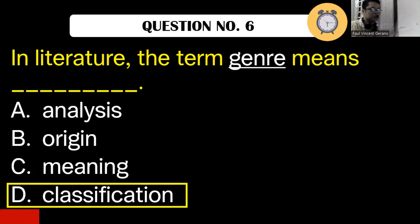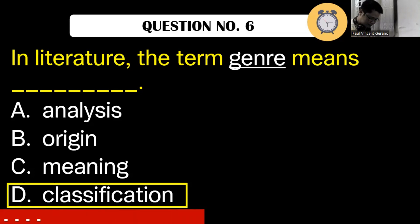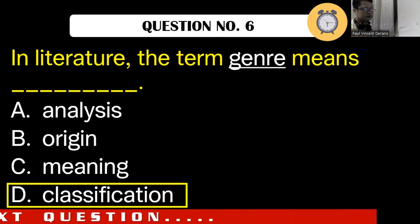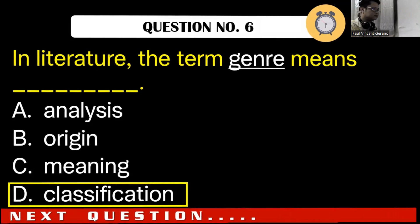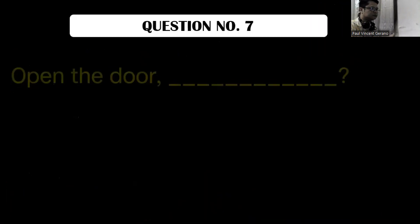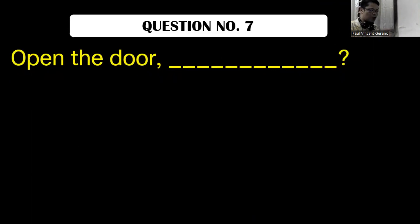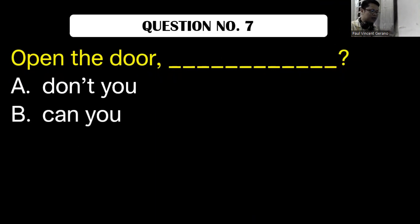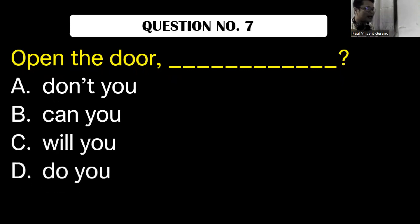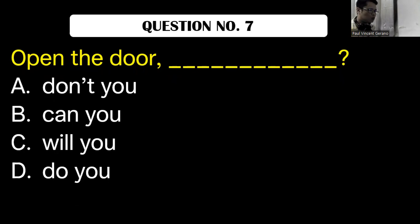Now let's go to question number seven. Open the door — blank. A, don't you? B, can you? C, will you? D, do you? What is the correct answer? Please write your answer in the chat box.